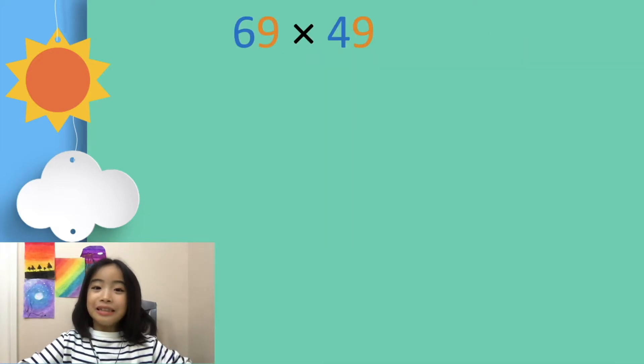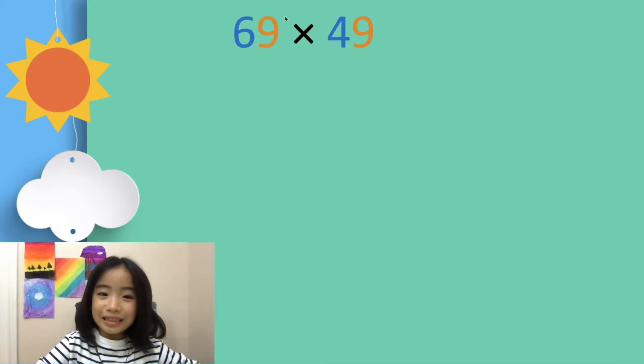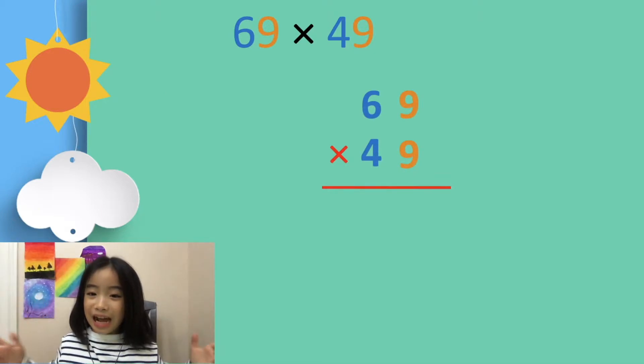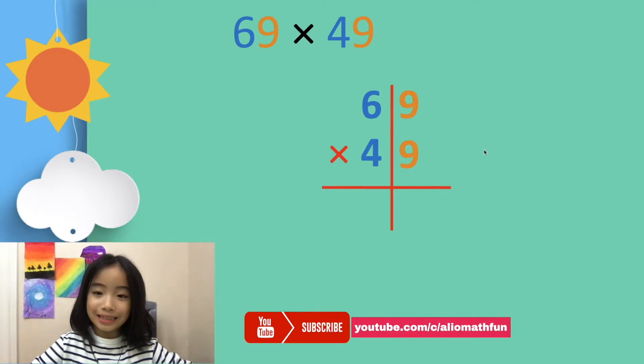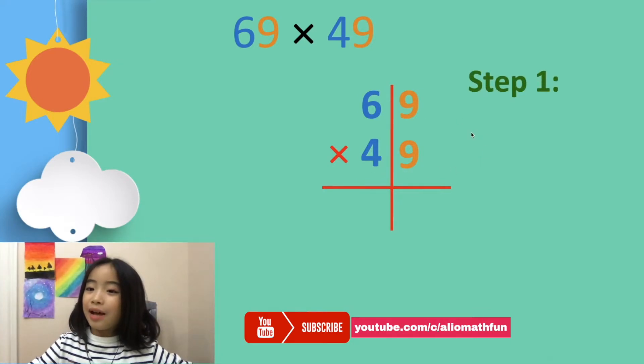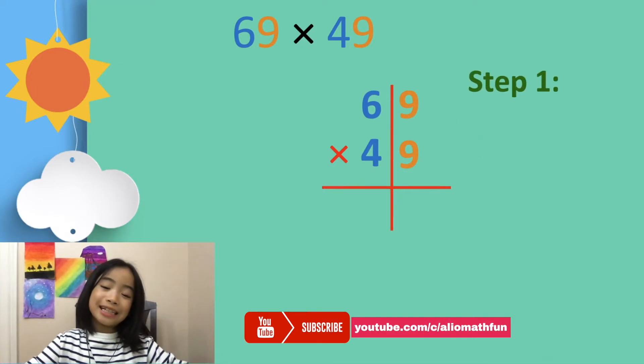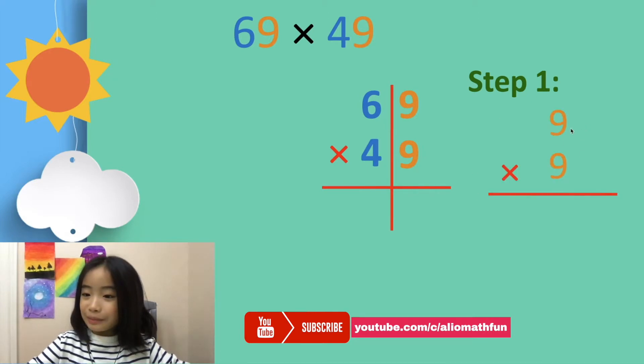Let's learn the trick. First, let's use 69 times 49 as our example. We write it in our normal vertical form, and then we split it in half—the ones position and the tens position. Step 1: Multiply the ones digit. 9 times 9 equals 81.